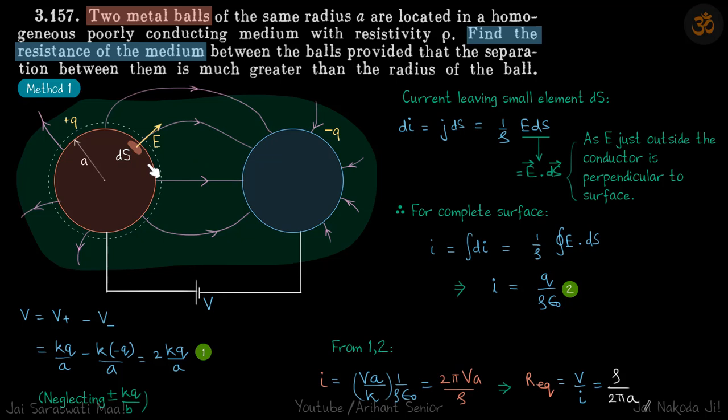To find current, see this is a spherical conductor, so we have some idea about the electric field of this conductor. Now we can relate this electric field to the current by using the concept of current density. Because current density we know is sigma times E and sigma is 1 by rho. This is how we are relating the current to the charge on this sphere.